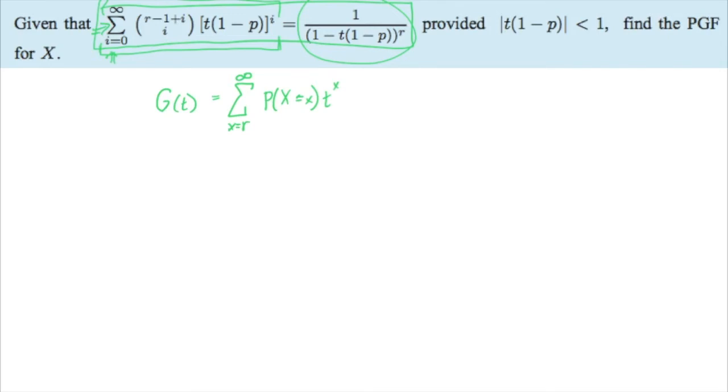So x goes from r to infinity. So we're going to multiply it by the probability as x equals x of t to the x power. From there, we know that the probability of a negative binomial is this right here. That's in your formula packet. So we're going to put this in for the probabilities. So we now have that the PGF, G(t), is equal to the summation from x equals r up to infinity of x minus 1 choose r minus 1 times p to the r times 1 minus p to the x minus r.